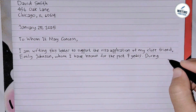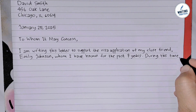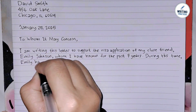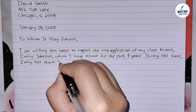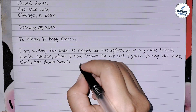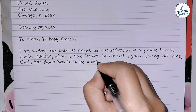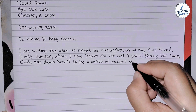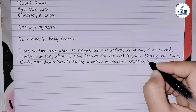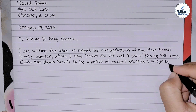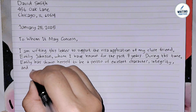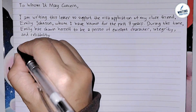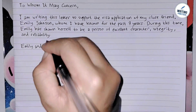Here is an example of how you write the first paragraph: 'I am writing this letter to support the visa application of my close friend Emily Johnson, whom I have known for the past seven years. During this time, Emily has shown herself to be a person of excellent character, integrity, and reliability.'